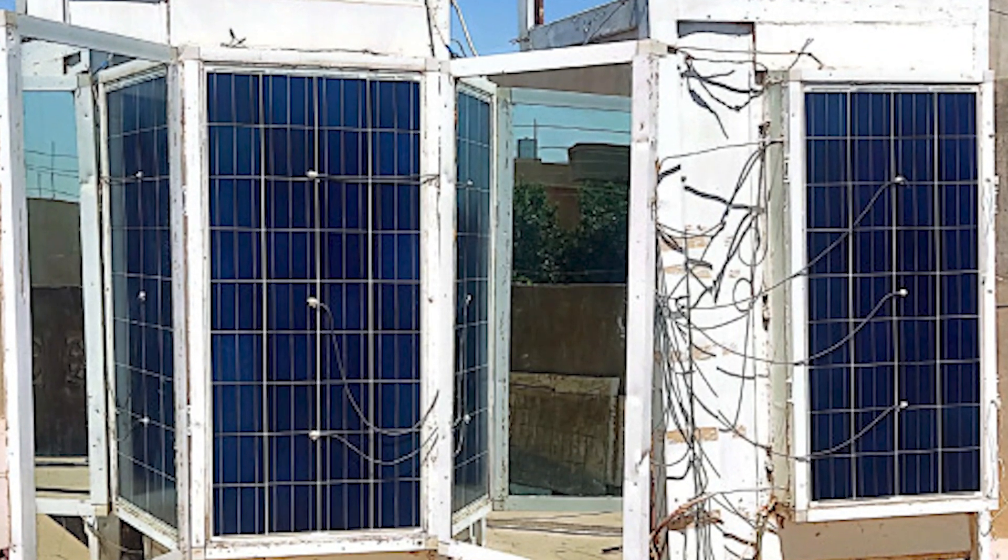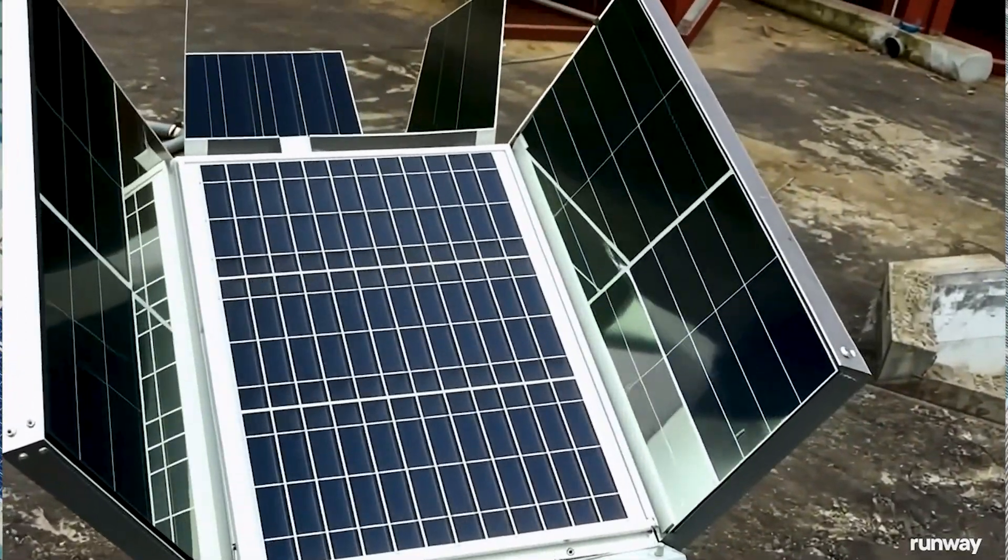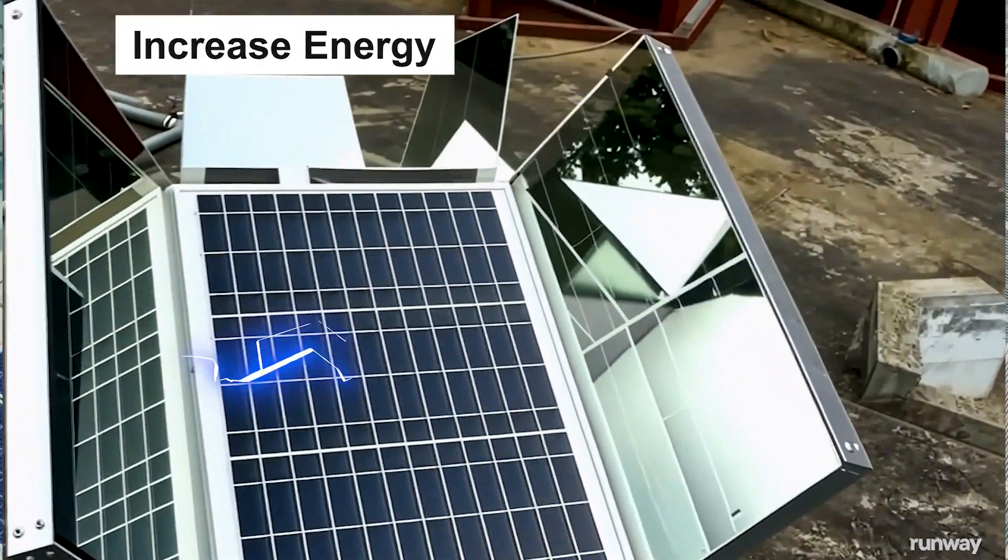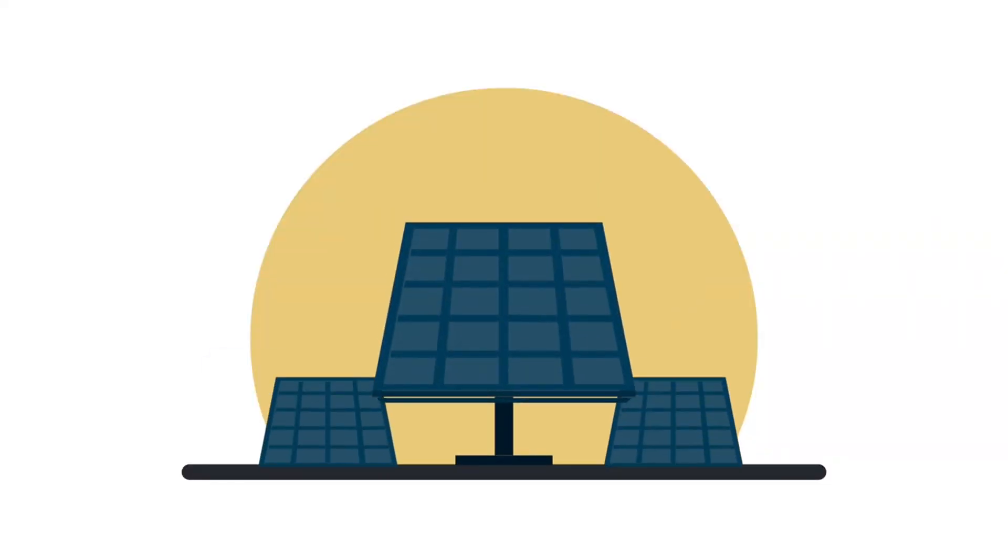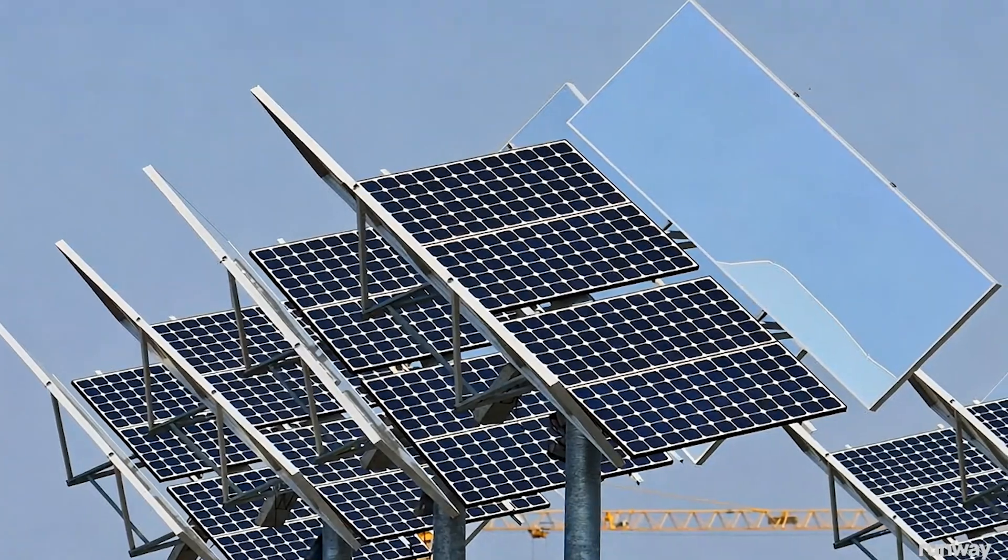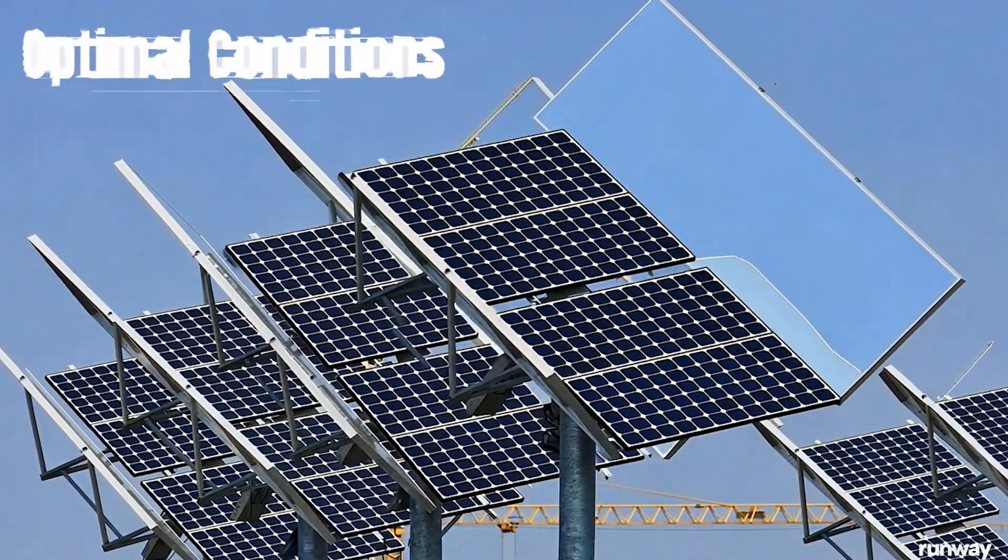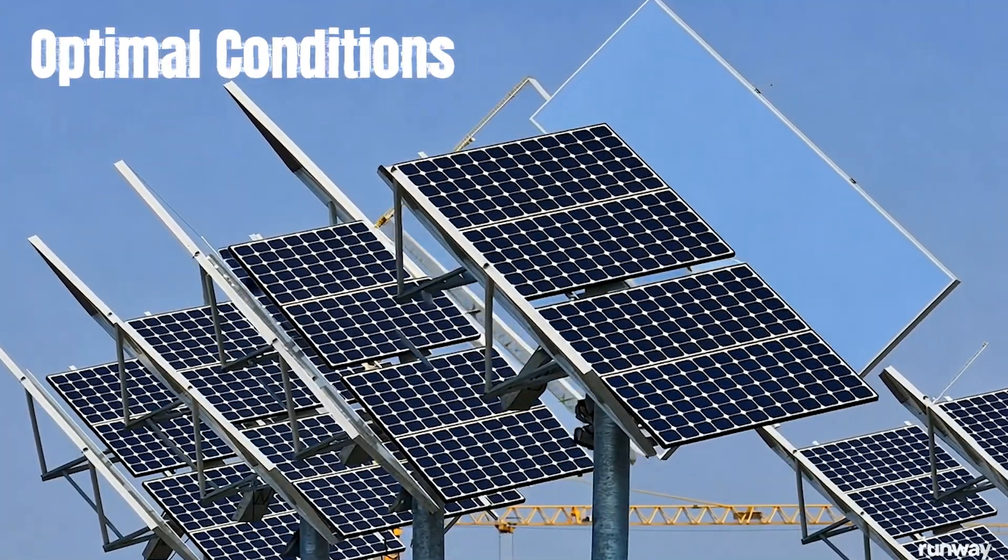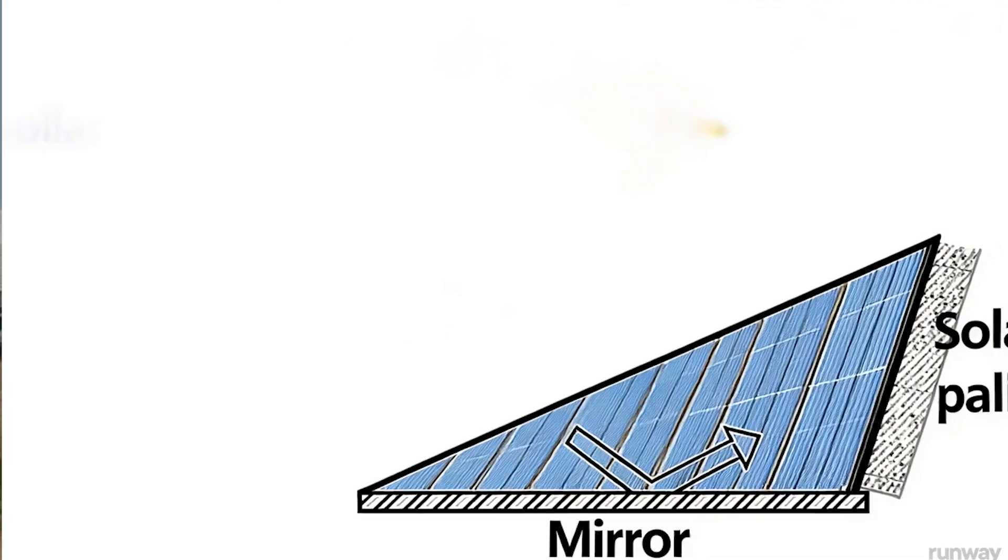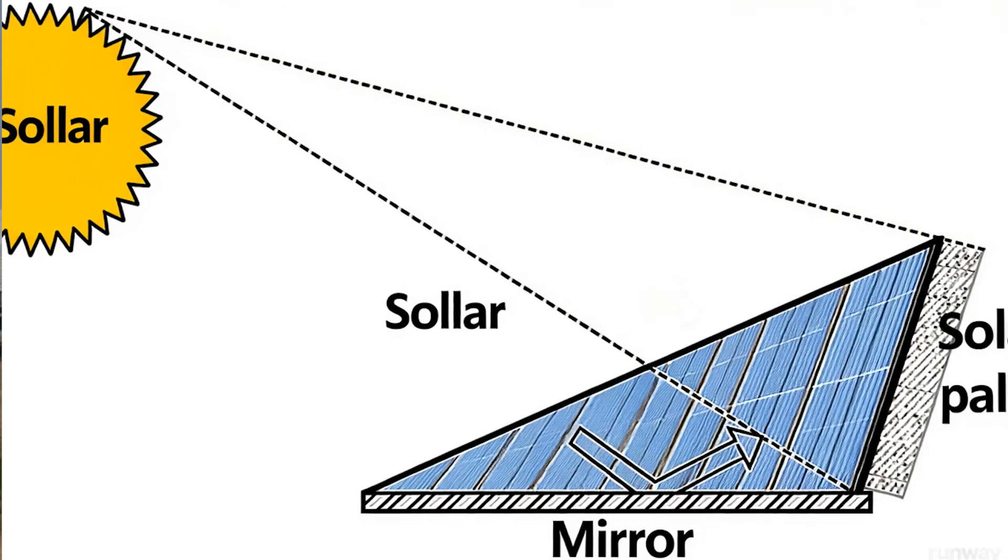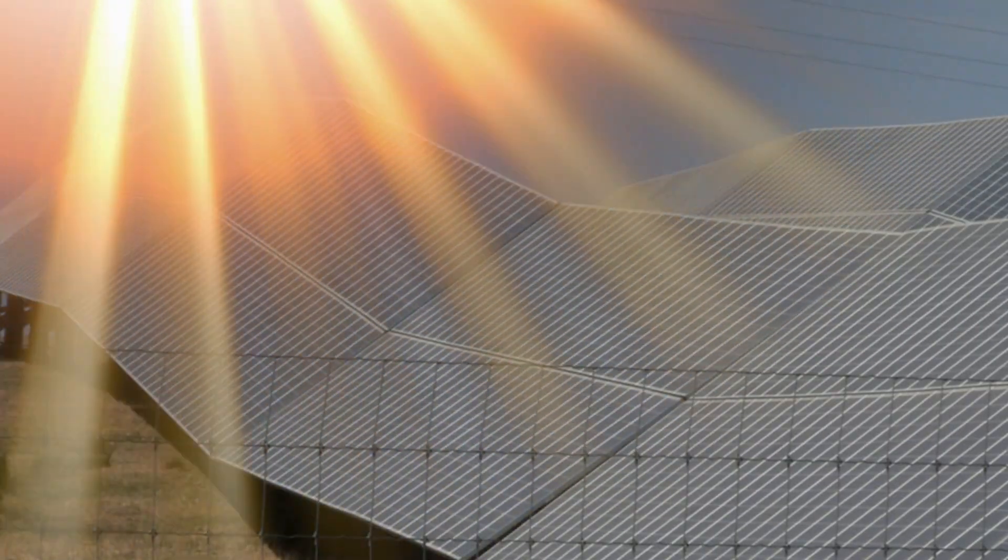However, some studies and experiments have shown that using mirrors can increase the energy output of solar panels by anywhere from 20% to 50%. This range is influenced by how effectively the mirrors concentrate sunlight on the panels. For instance, in optimal conditions with well-aligned mirrors and good sunlight, the upper end of this boost might be achievable. In less ideal conditions or with less precise setups, the boost might be closer to the lower end of the range.